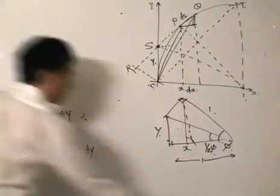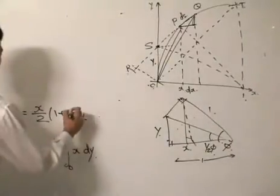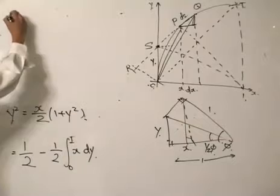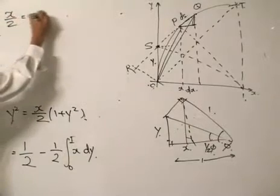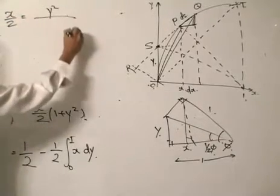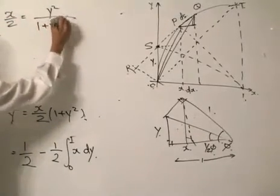Let me just quickly clear the board. 1 plus y squared. I'll rearrange that to x divided by 2 equals y squared over 1 plus y squared.